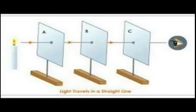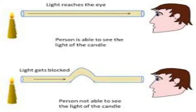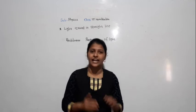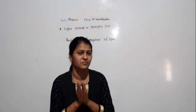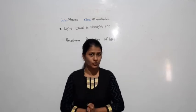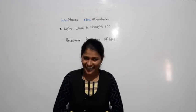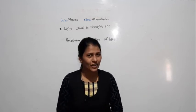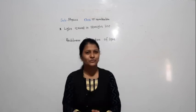So students, we have done two activities and I have proved that light always travels in a straight line, and that phenomenon is called the rectilinear propagation of light. Today's work will be that whatever experiment I have shown, just recall it and write it in your physics notebook. This will be your homework. Thank you.